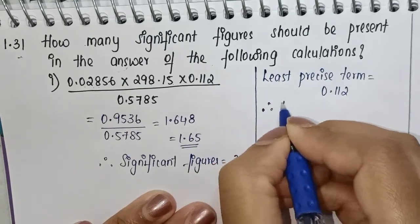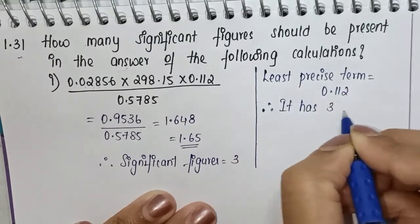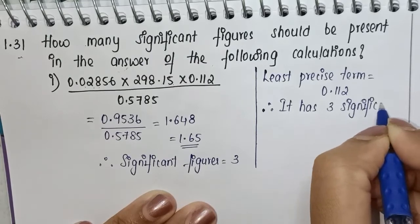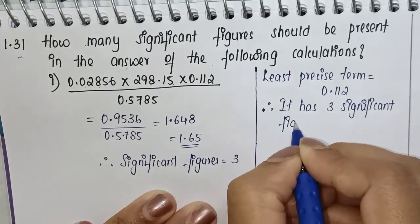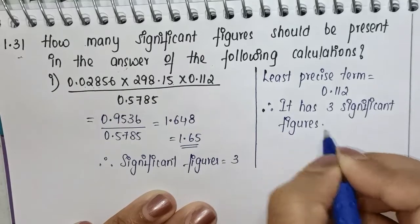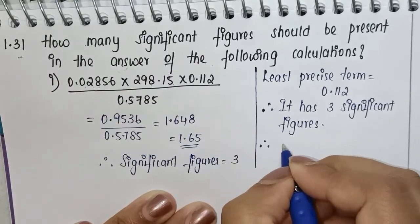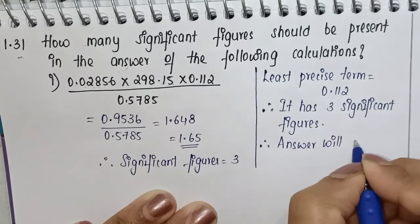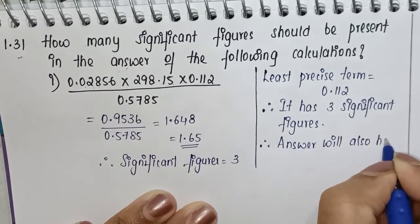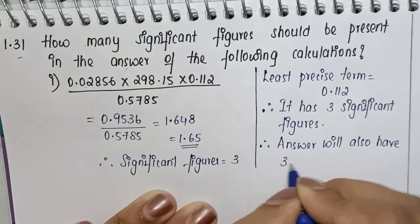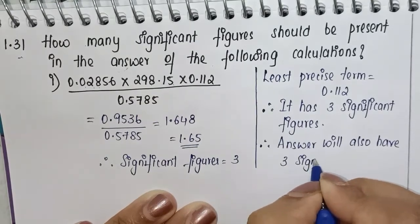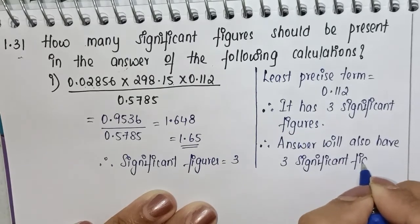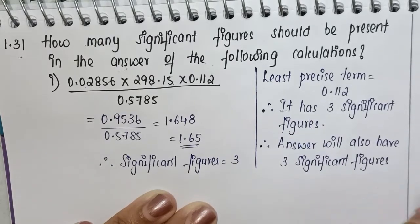This number has three significant figures. Therefore, the answer will also have three significant figures. So if you're good at identifying the least precise term, you can use that method.